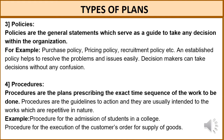The next type is procedures. Procedures are guides to action. They are plans that prescribe the exact time sequence of work to be done, and are intended for works which are repetitive in nature. For example, the procedure for admission of students in a college, or a procedure for execution of a customer's order for supply of goods. According to Terry, a procedure is a series of related tasks that make up a chronological sequence and the established way of performing work to be accomplished. While a policy is a guide to thinking, a procedure is a guide to action.